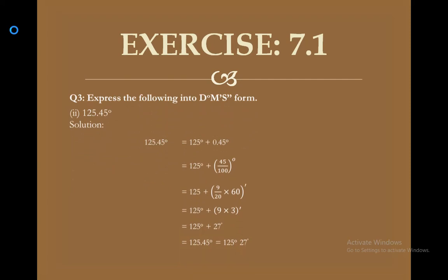Question 3: express the following into degree-minute-second form. The value given is 125.45 degrees. The 125 is the fixed degree part. The remaining 0.45 degree — removing the decimal and writing over 100 gives 45/100, simplified to 9/20. To convert degrees to minutes, multiply by 60. Simplifying: 9 × 3 = 27 minutes. The final result is 125 degrees 27 minutes.